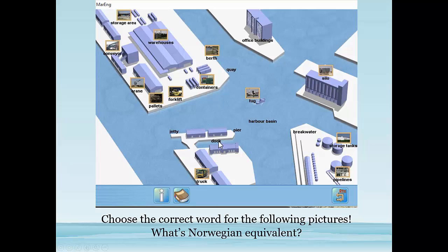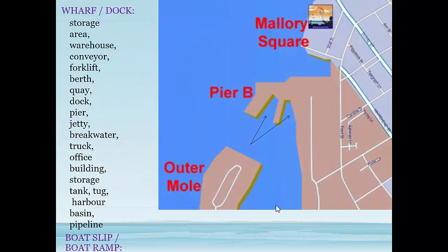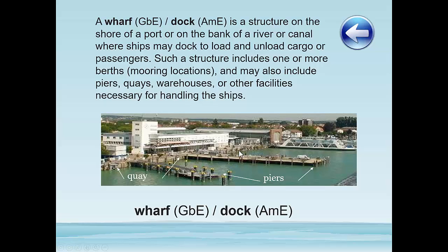So we're going to take the first word: dock. Now in this picture you can see it's a three-sided area of water where you would generally moor a ship. Actually, the word dock in American English is equivalent to the word wharf in British English. So here we have a picture — this whole area in American would be called a dock and in British a wharf — and what we mean by those two terms is a general structure on the shore or on a bank of a river or canal where ships dock in order to load and unload cargo or passengers.